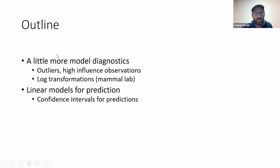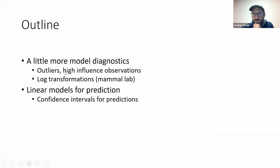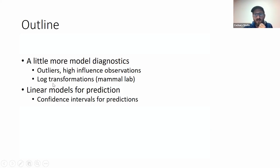We'll talk a bit more about model diagnostics and threats to the validity of a linear model, in particular looking at the impact that outliers or high-influence observations can have on a fit. We'll go over one way to fix the problems that can be caused by that. Then we'll go over linear models for prediction and how to quantify uncertainty about a prediction from a linear model.